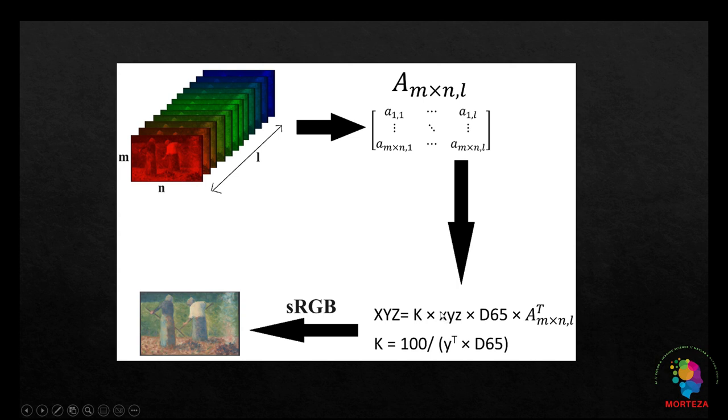So the standard observer data is actually called color matching functions, and we're going to use the 1931 standard observer. So all you have to do to obtain the normalizing factor is to multiply the y of the color matching function by the data of the standard illuminant, and then you put that into this formula.